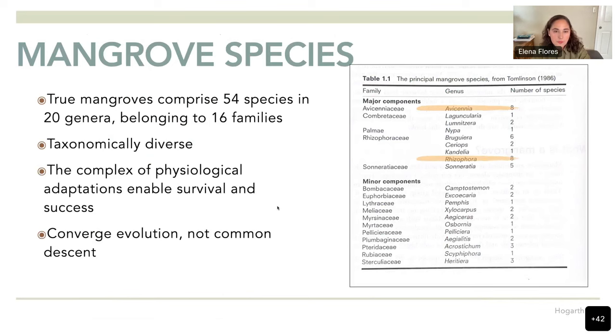We have 54 species of mangroves in 16 families. This means that mangroves are taxonomically diverse.